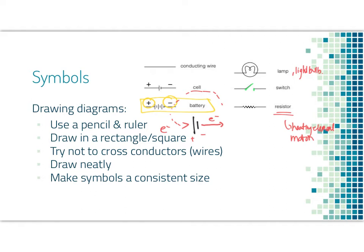When we're drawing circuits, we're going to use a pencil and a ruler. You want your wires to be straight, not like mine that have all been circular here. We're going to draw in a rectangle or a square diagram. We're going to try not to cross wires. If you can draw in a square, you're going to draw in a square. If they must cross, you can do that, but we're really trying not to. Draw neatly and try and make those symbols a consistent size in your diagram.